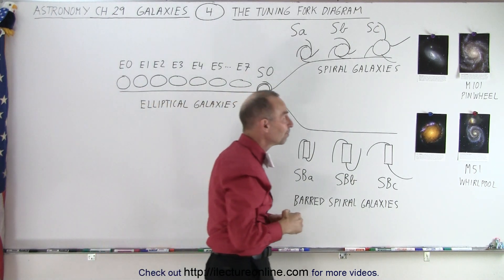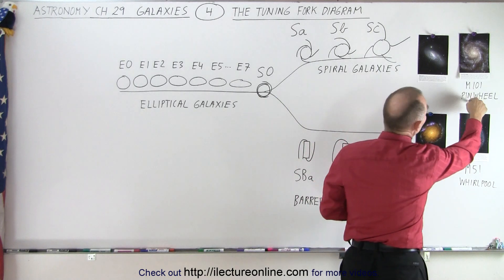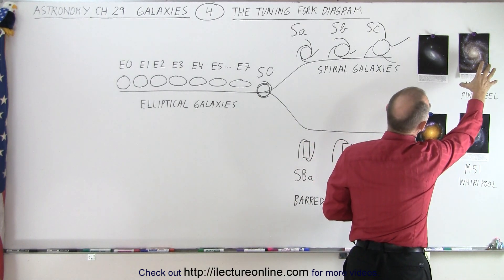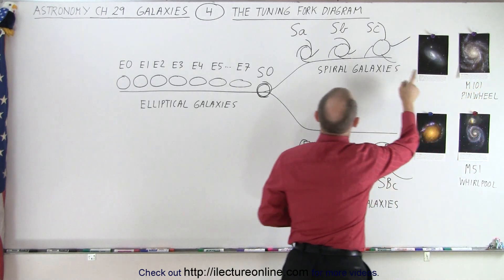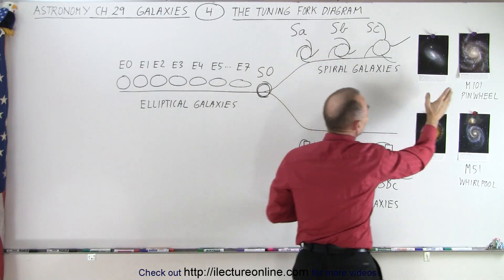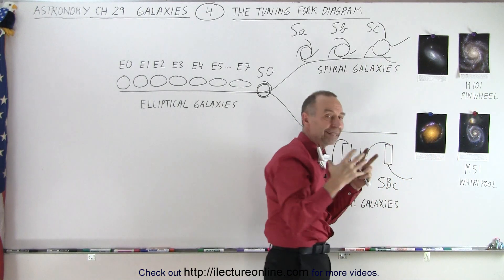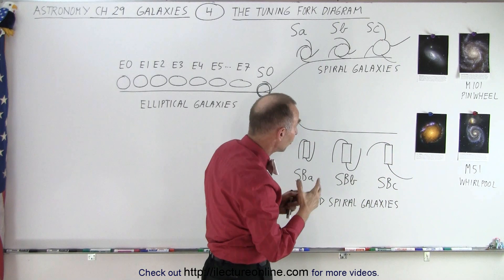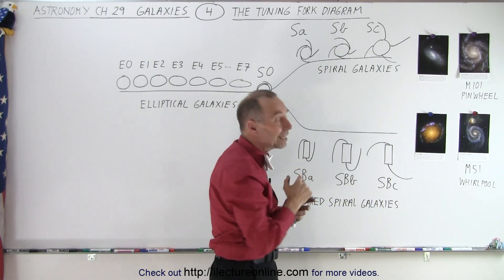So here we have a few examples. We have the pinwheel galaxy and you can see that the pinwheel kind of looks like an SB. The arms are far away enough to not call it an SA, and they're not flung far out. We have quite a few of them that are relatively tightly wound around the central bulge. So a pinwheel galaxy is typically called an SB galaxy.